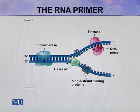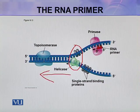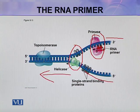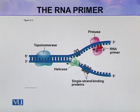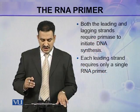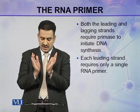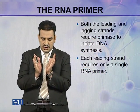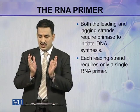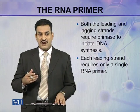Here you can see the replication fork moving in one direction. These are two single-stranded DNAs, and this is primase. The red-colored segment is a small RNA primer. This RNA primer is a compulsory requirement for the synthesis of new DNA strands. Both the leading and lagging strands require primase to initiate DNA synthesis — both require the synthesis of RNA primers.